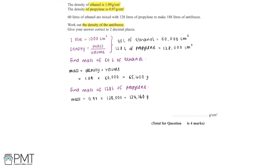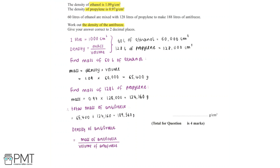The total mass of antifreeze is 65,400 plus 124,160, which equals 189,560 grams. We find the density of antifreeze by dividing the mass by the volume: 189,560 divided by 188,000 centimetres cubed equals 1.00829787... grams per centimetres cubed. Rounded to two decimal places, the density of antifreeze is 1.01 grams per centimetres cubed.